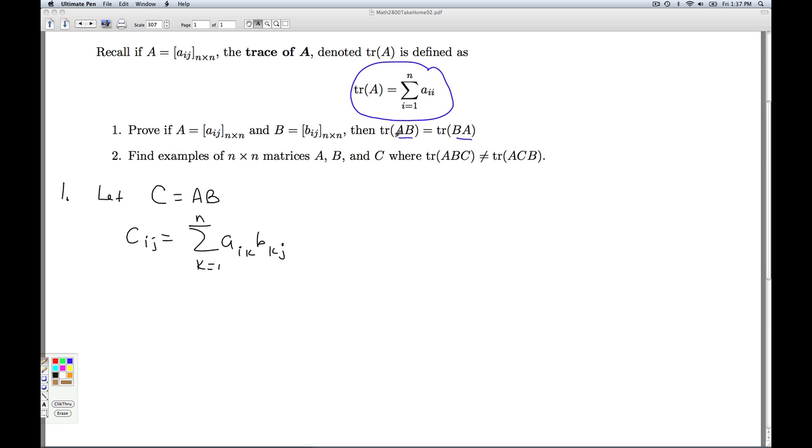Now I'm interested in the trace of AB, so I'm interested in the trace of C. The trace of C is the sum from I equal 1 to N, all these matrices are N by N, of the II entry of C.